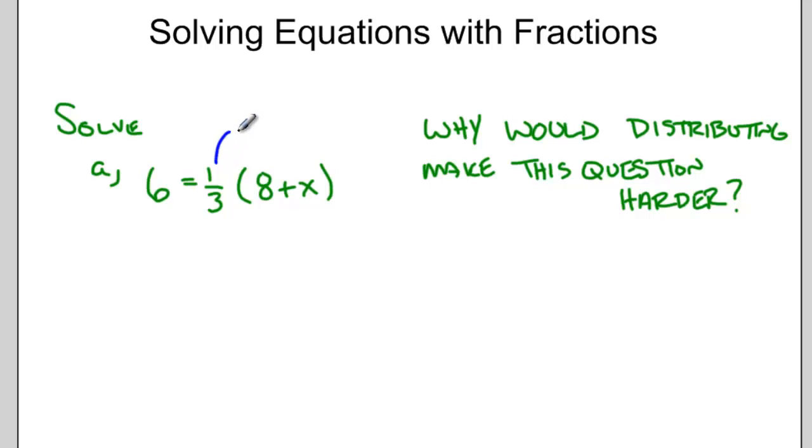So if we look at this and we imagine distributing the 1 third into the brackets, we should see that eventually we're going to be multiplying 1 third by 8, which would end up giving us 8 thirds.